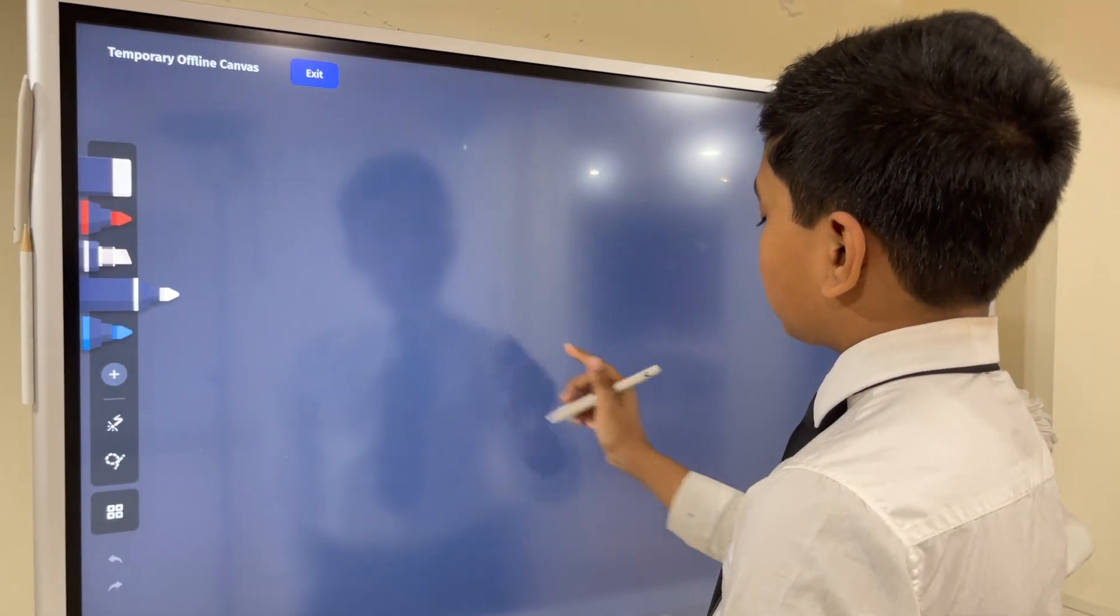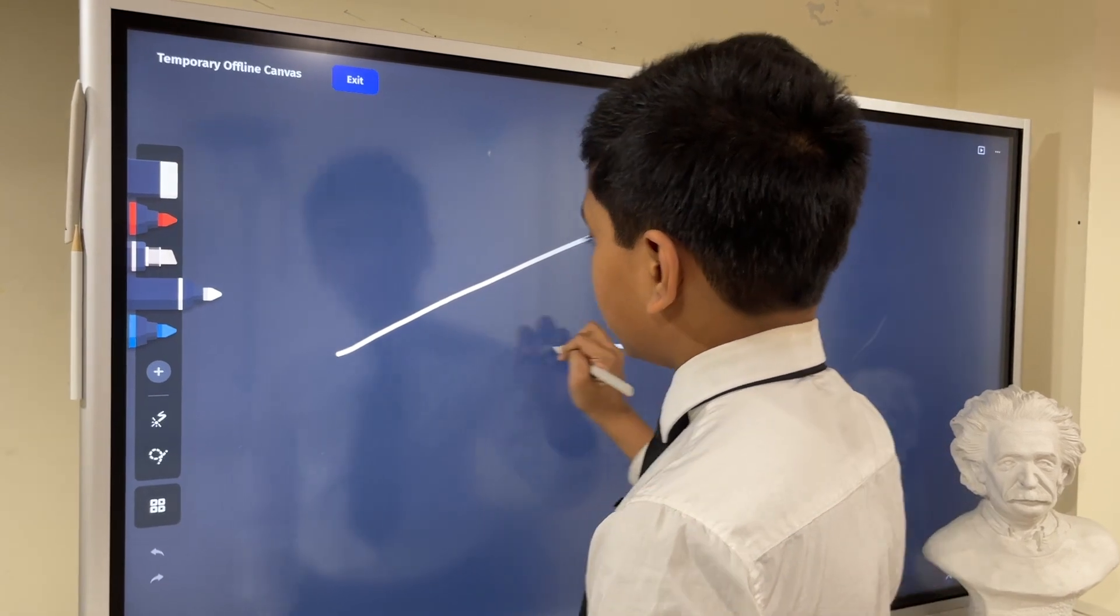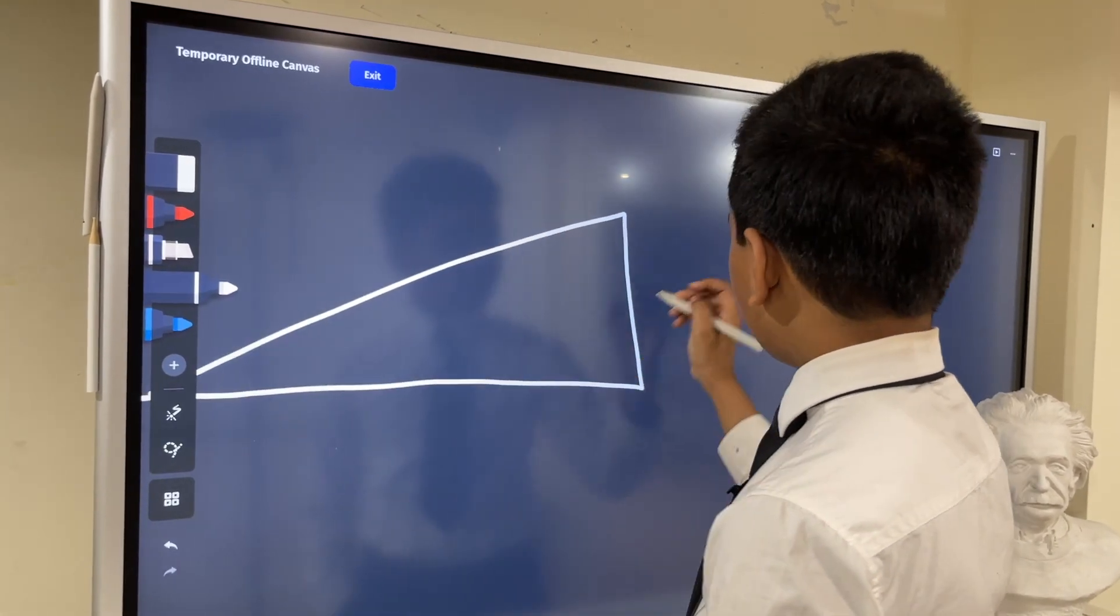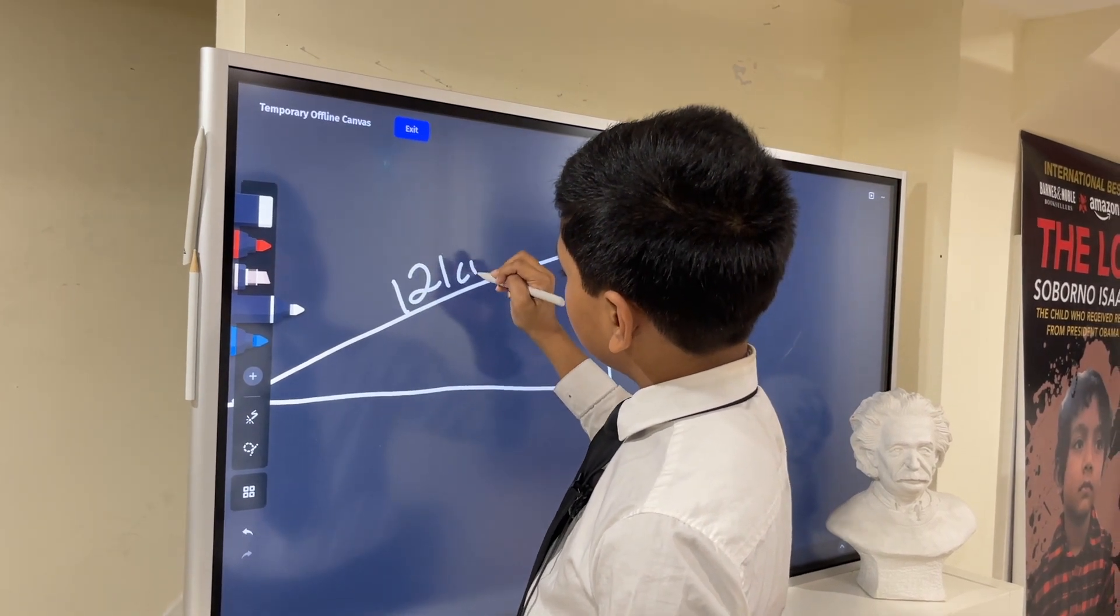Today, we're going to be talking about inclined planes. Let's say we have an inclined plane that looks something like this. It is 6 centimeters tall and 121 centimeters long.